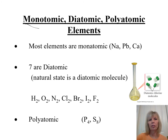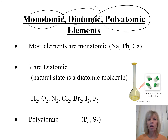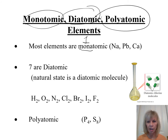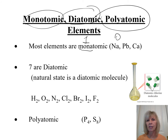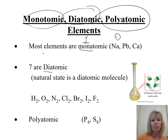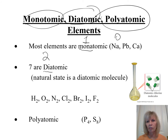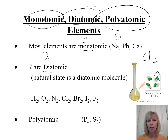Elements can exist as monatomic, diatomic, or polyatomic. Monatomic ('mono' = one) means the element in its natural state exists as a single atom — for example, sodium. Almost all elements on the periodic table are monatomic. Diatomic ('di' = two) means seven elements naturally exist as two atoms bonded together — for example, chlorine (Cl₂). The seven diatomic elements are H₂, O₂, N₂, Cl₂, Br₂, I₂, and F₂.